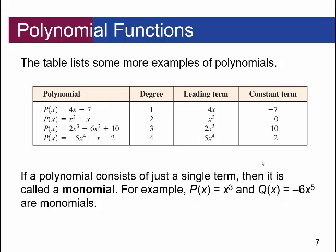Here's a list of more examples of polynomials. Let's take a look at the third one: 2x cubed minus 6x squared plus 10. This is a degree 3 polynomial. The leading term is 2x cubed, so the leading coefficient is 2, and the constant term is 10. Knowing that it's degree 3 with a positive leading coefficient actually tells us a lot about the graph. After this lecture, you'll be able to think about what the graph looks like just from that information.